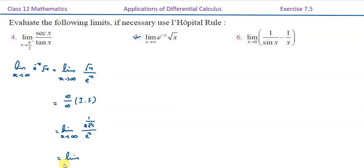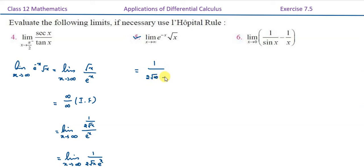Which is equal to limit x tends to infinity of 1 divided by 2 root x into e^x. Applying the limit, we get 1 divided by 2 into root infinity into e^infinity, which is 1 divided by infinity, and that equals 0.